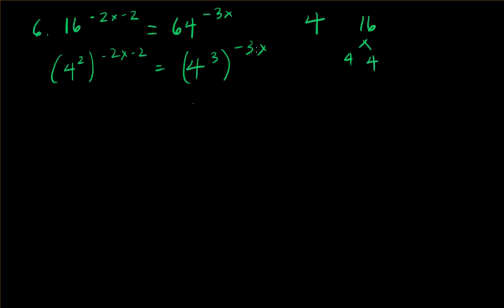So just go ahead and check that. Okay, now we're going to multiply this and distribute it in here, so 4 to the 2 times negative 2x minus 2 equals 4 to the 3 times negative 3x. Let's go ahead and distribute that in.